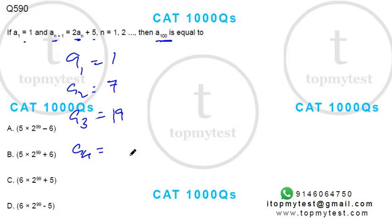a₄ will be 38 plus 5, which is 43. a₅ would be 43 times 2, which is 86 plus 5, so 91.